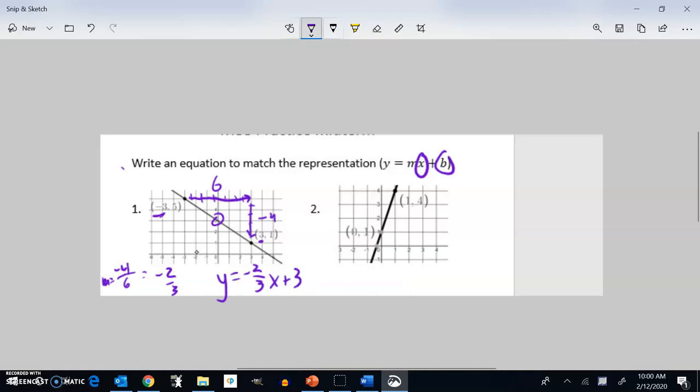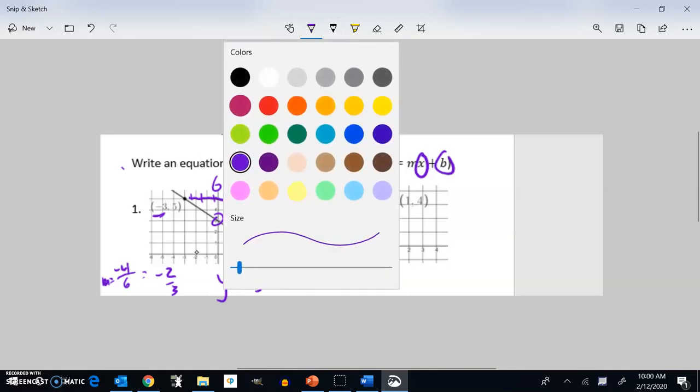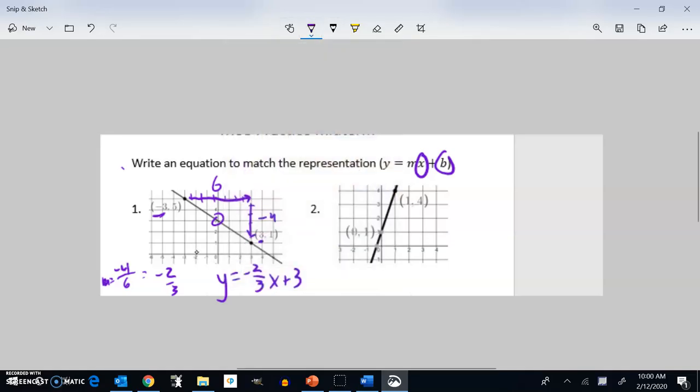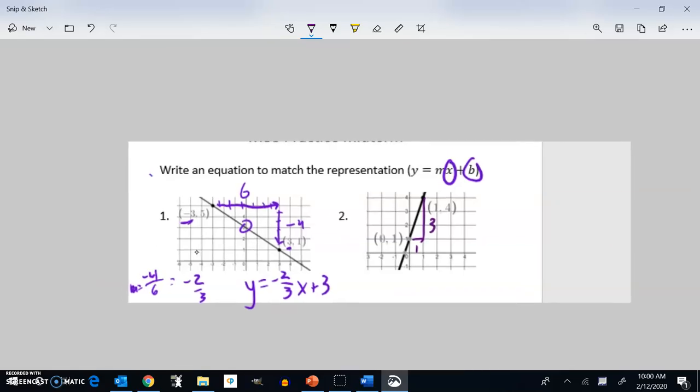All right, for the second one, same idea. I want to find the slope. So it looks like there's a point here. It looks like this goes over 3, up 3. In other words, 1 to 4 is 3, 0 to 1 is 1. So this has a slope of 3. 3 over 1, which is 3. So so far, I know it's y equals 3x.